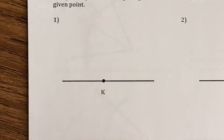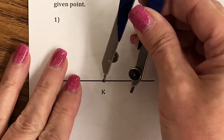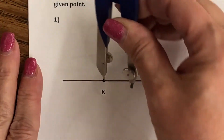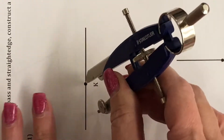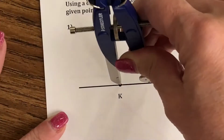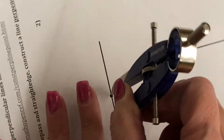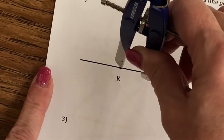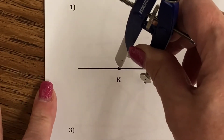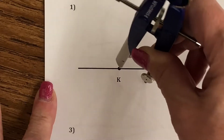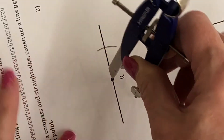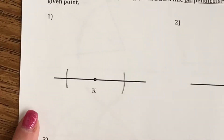We're actually going to put our sharp point of the compass on point K. I'm going to make an arc on both sides, making sure it's narrow enough that they don't go off the paper. So I'm going to go ahead and make an arc here and an arc here.